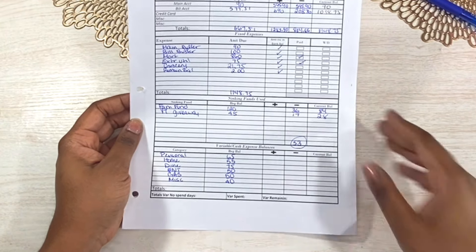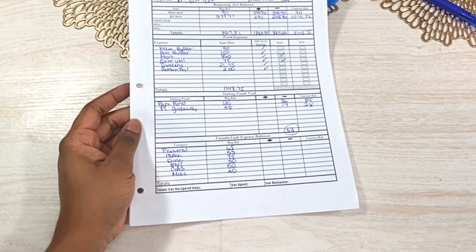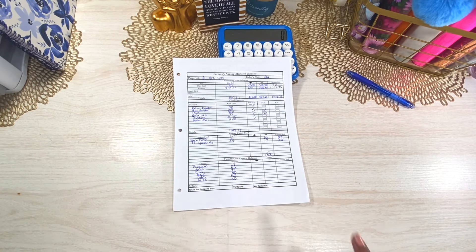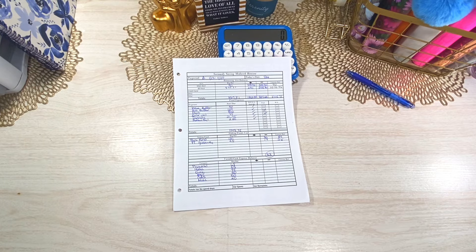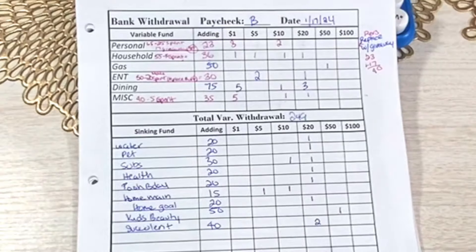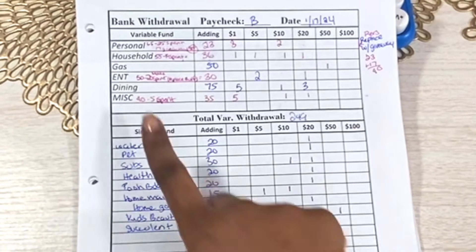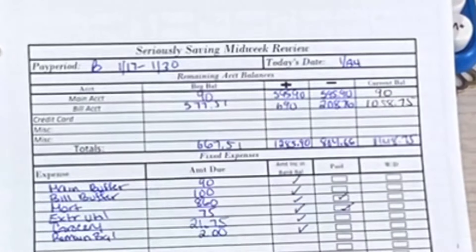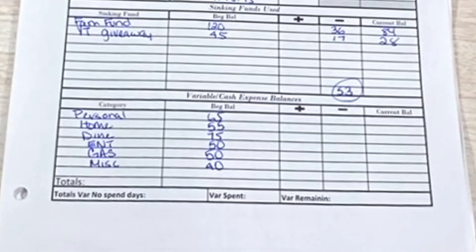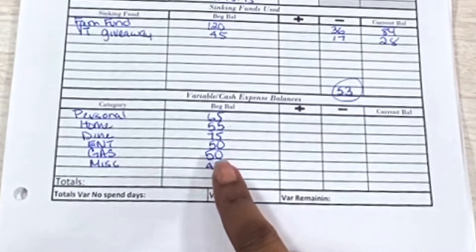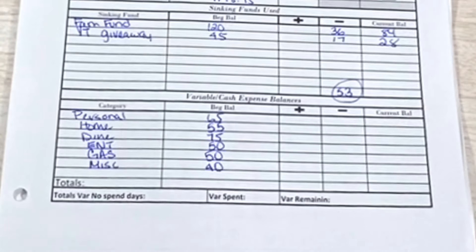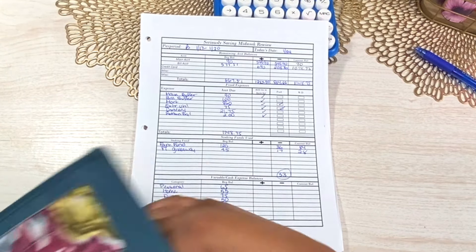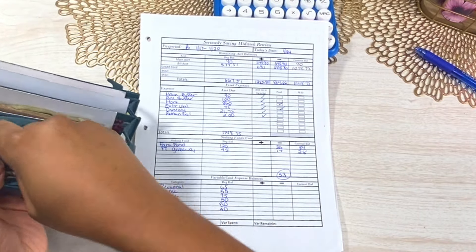All right, so for our cash categories that we stuff on payday, which was the 17th, let me show you that budget so I can show you where it came from. So this was the budget for paycheck B. This is what we cash stuffed in all of our envelopes. I did spend some money on payday, so that didn't come out of the bank. But as far as budget, we budgeted $65 for personal, $55 for home, $75 for dining, $54 entertainment, $50 for gas, and $40 for miscellaneous. So now let's look and see what we have left in those envelopes in our cash wallet. So let's start with personal since it's at the top.